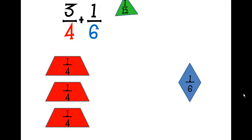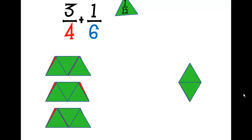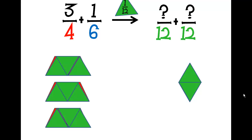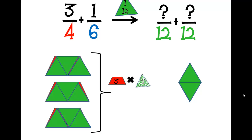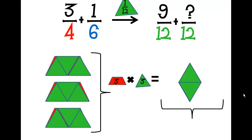When we say we've got twelfths as a common denominator, that changes the way our addition problem looks. It's no longer three-fourths plus one-sixth — twelfths becomes the denominator. However, we have to get different numerators. There were three red trapezoids, and each one is covered with three green triangles, for a total of nine. So three-fourths becomes nine-twelfths. There was one blue diamond, covered with two green triangles — that equals two. So one-sixth becomes two-twelfths.